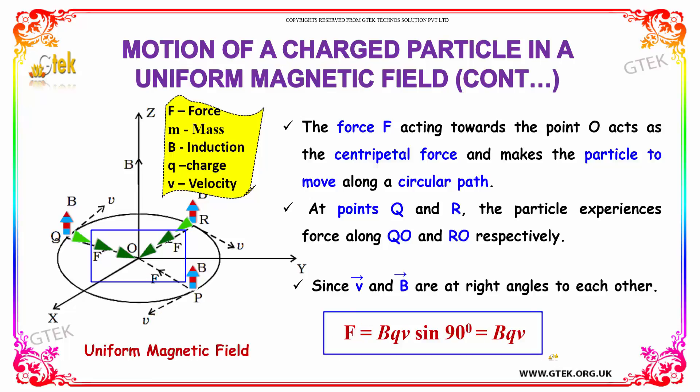Since V vector and B vector are at right angles to each other, the force F equals BQV sin 90 degree. Sin 90 degree is 1, so force equals BQV.